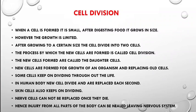Some cells keep on dividing throughout life. In the human body, new cells divide and are replaced each second. This cell division — the forming of new cells — takes place each and every second inside the human body. It is a continuous process: the old cells die and the new cells replace them.